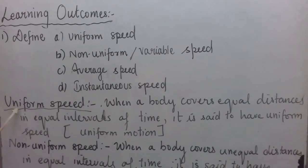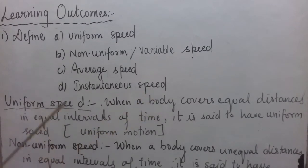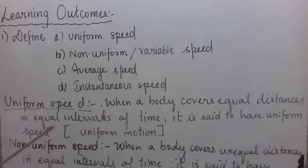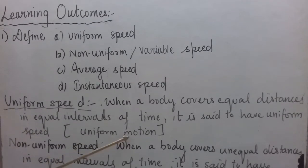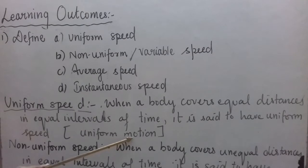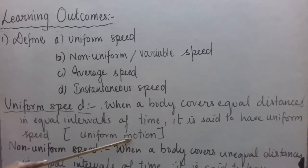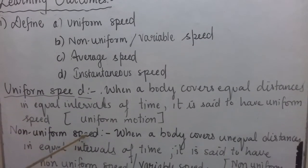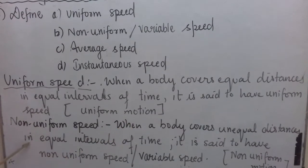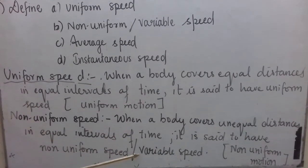Now let us see first what is uniform speed. When a body covers equal distances in equal intervals of time, then it is said to have uniform speed. If you recall, the same words are used to define uniform motion. We can also say: when a body covers unequal distances in equal intervals of time, it is said to have non-uniform speed or variable speed.